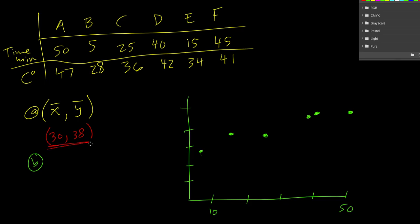Now I'm going to plot this point, which is 30, 38. Which is right there. Okay, I recommend doing it in a different color if you have access to that, or somehow marking it as your mean point or your average point.